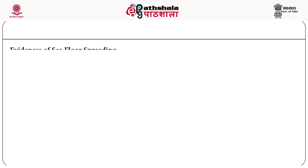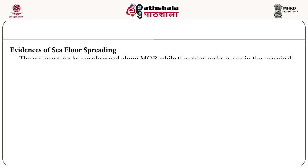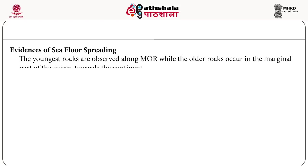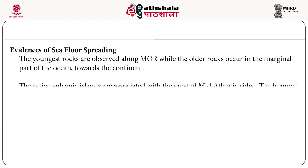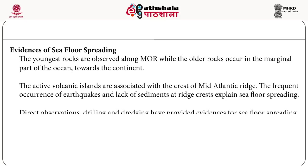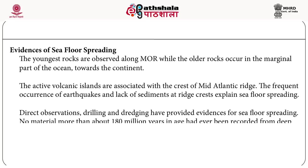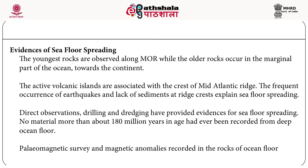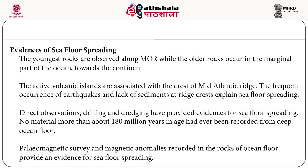Several evidences support seafloor spreading: the youngest rocks are observed along the mid-oceanic ridge, while older rocks occur in the marginal part toward the continent. Active volcanic islands are associated with the crest of the mid-Atlantic ridge. Frequent earthquakes and lack of sediments at the ridge crest, along with direct observations, drilling, and dredging, also provide evidence. No material older than 180 million years has ever been recorded from the deep ocean floor. Paleomagnetic surveys and magnetic anomalies in ocean floor rocks further confirm seafloor spreading.